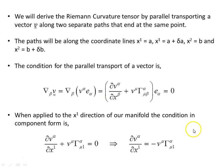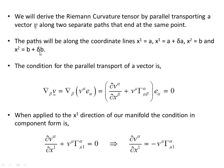We have some vector B and we're going to parallel transport it along two different paths. The paths will be along the coordinate lines x1 equals A to x1 equals A plus delta A, and x2 equals B to x2 equals B plus delta B. Delta A will be incredibly small — it's a very small region on the manifold. So it's a very small loop, and we're going to parallel transport this vector around this very small loop in two opposite directions, and see what the change is at point C.